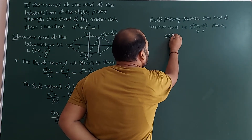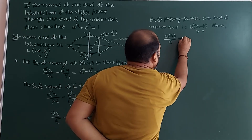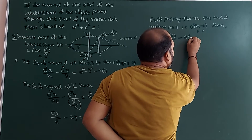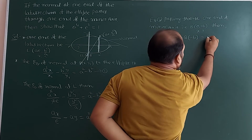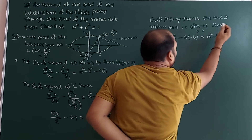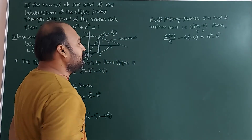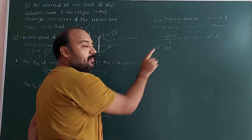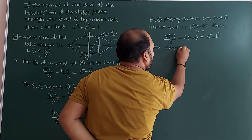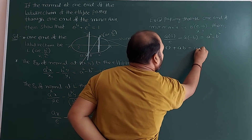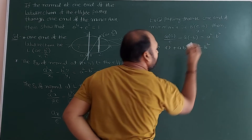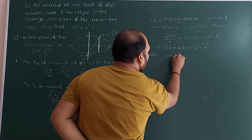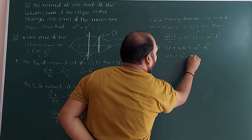So we get: a·0/e − a·(−b) = a² − b². The first term becomes 0, and minus times minus gives plus ab, so: ab = a² − b². That implies ab = a² − b².